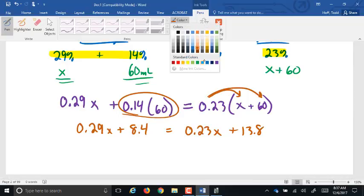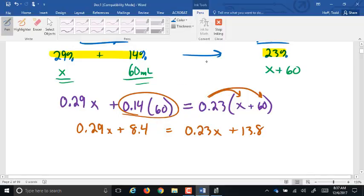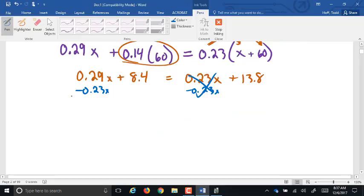Now we've simplified everything we can on each side. Our next step is to see if there's anything that we have to cancel out between the two sides. In other words, does the X appear on both sides? And it does. We've got to get rid of one of them. Which one are we getting rid of? 0.23. So we're going to subtract 0.23X. That's going to be gone. So over here, this is 0.06X plus 8.4 equals 13.8.